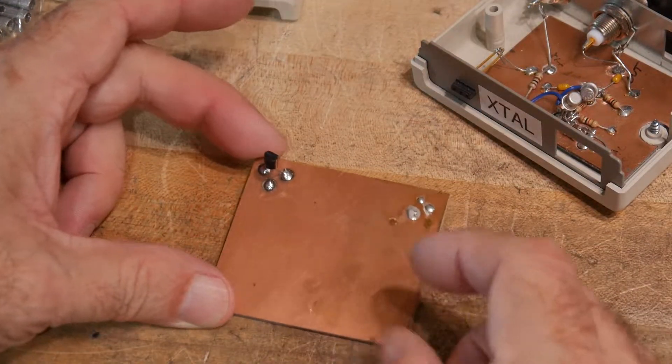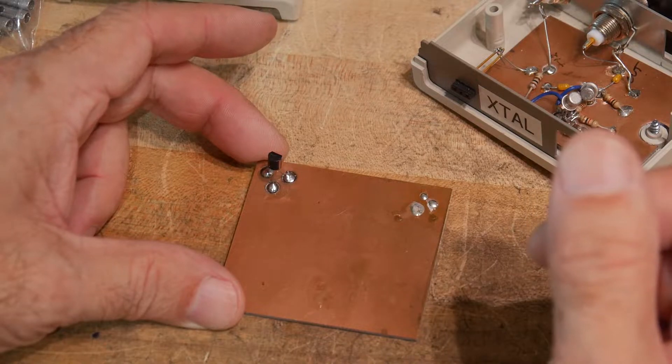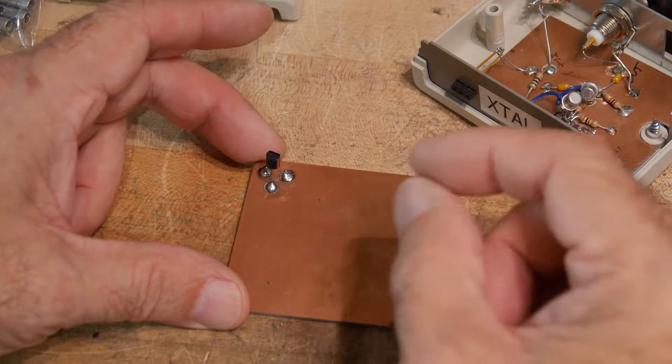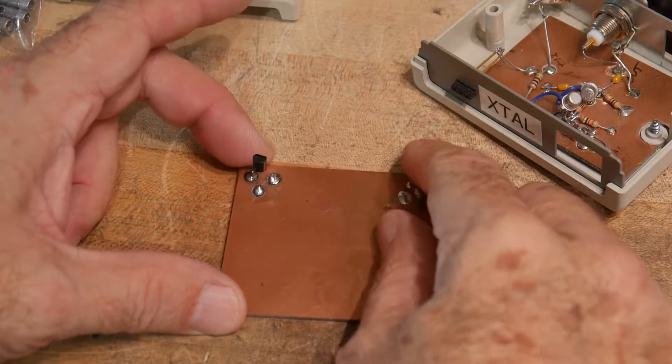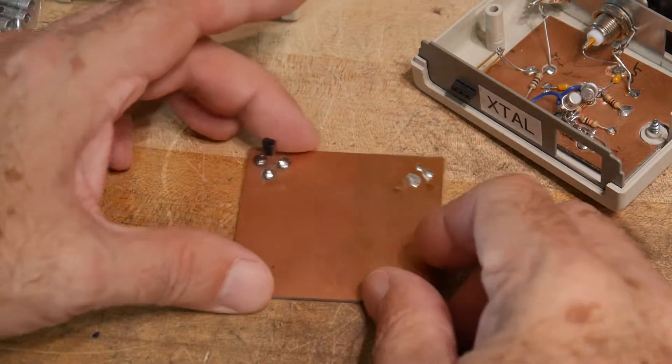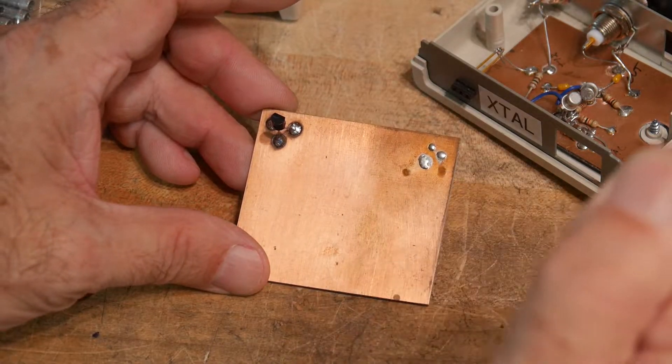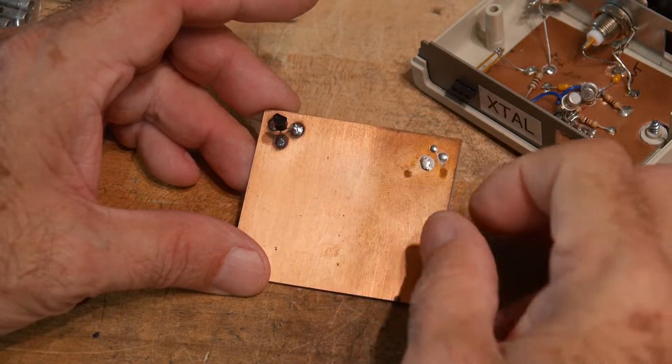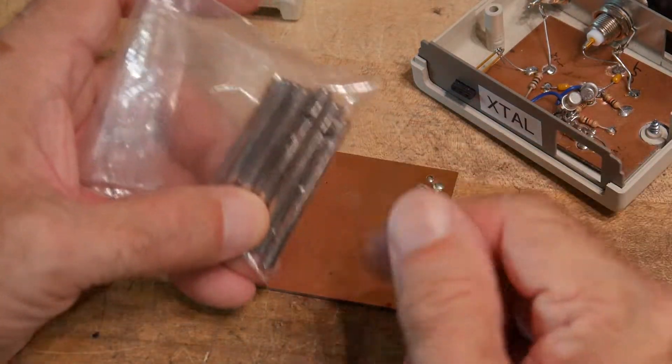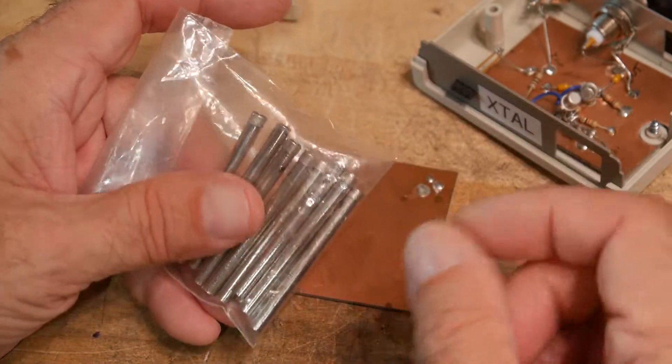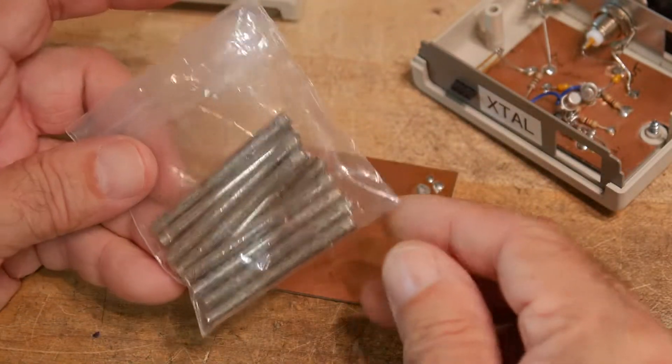I've seen other people use little hole saws that have little jagged teeth. I've found those and I've used those before. They tend to grab in the PC board and they'll spin it, which is not good. And then they'll also have a tendency to not do anything, and then bite hard and then cut too far. Whereas these ones that just do grinding, they're not actually cutting, they're just grinding, seem to be much easier to control.